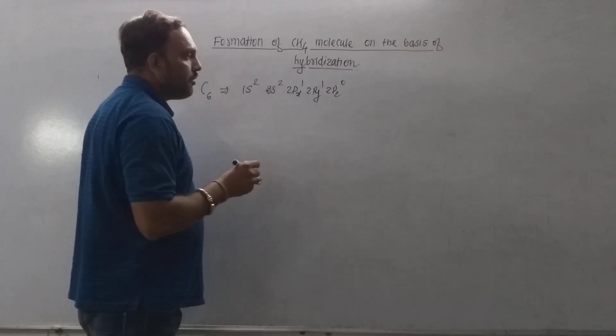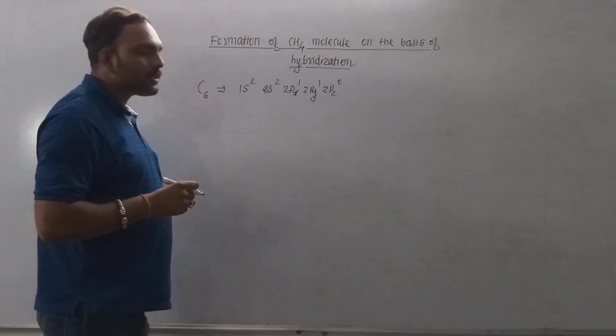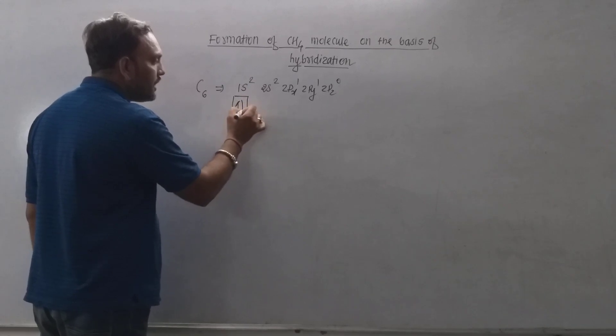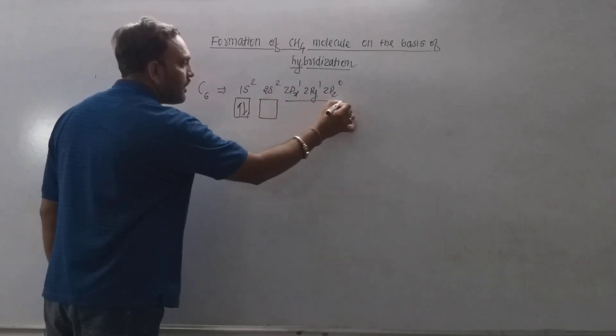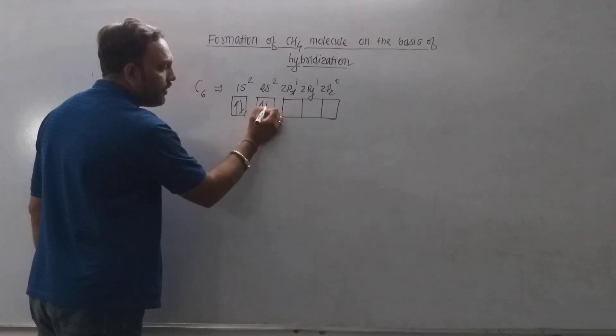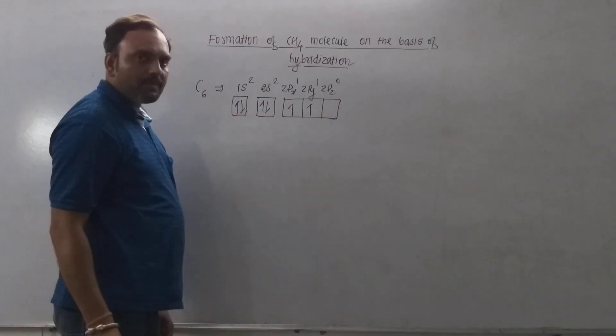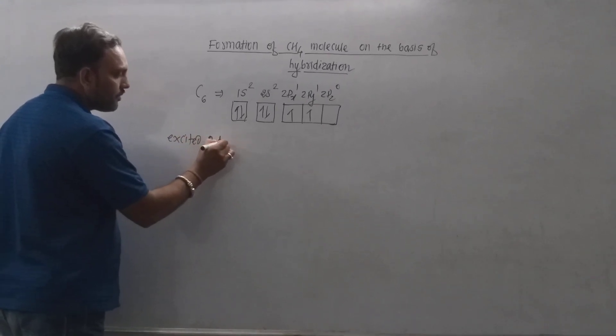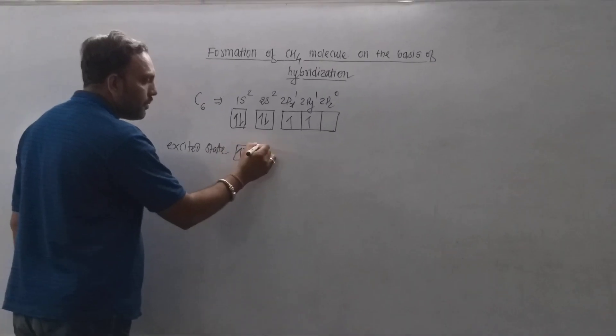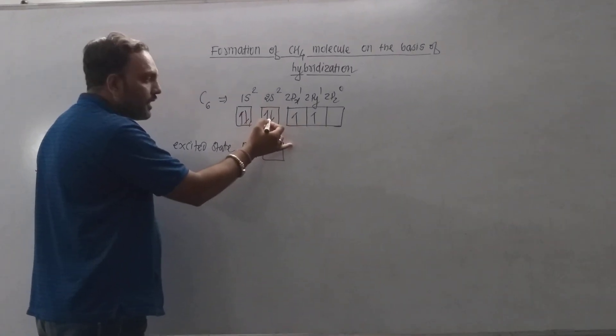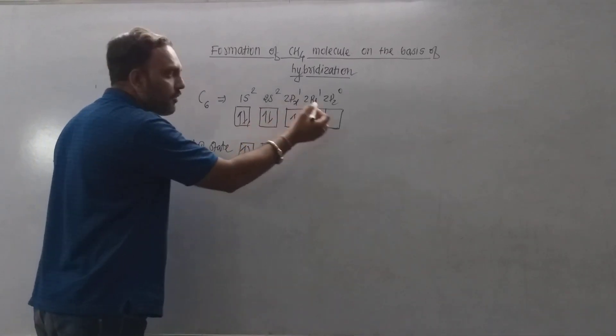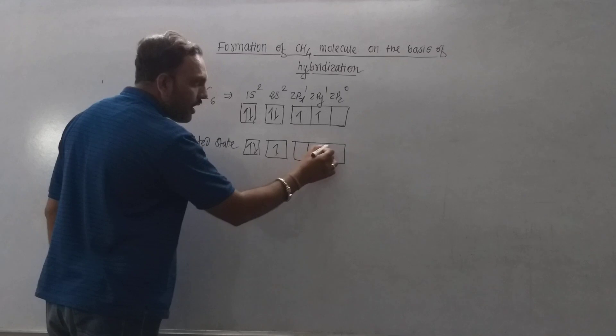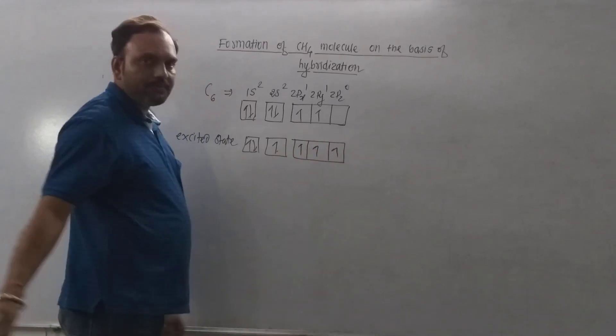Carbon contains vacant 2pz orbital and filled 2s orbital in the valence shell. So first of all it undergoes excitation by promoting an electron from filled 2s orbital to the vacant 2pz orbital of the valence shell. So in excited state carbon promotes an electron from lower energy orbital, that is 2s orbital of the valence shell, to the vacant 2pz orbital. So excited state electronic configuration of carbon can be written as...